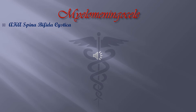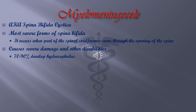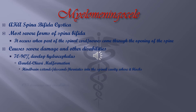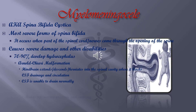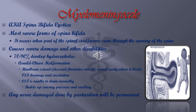Myelomeningocele, also known as Spina Bifida Cystica, is the most severe form of Spina Bifida. It occurs when parts or all of the spinal cord and/or nerves come through the opening of the spine, causing severe damage and disabilities. 70–90% develop hydrocephalus because of Arnold-Chiari malformation, which is when the hindbrain extends, descends, or herniates into the spinal cavity, causing pressure and swelling inside the head. Any nerve damage done at birth will be permanent.